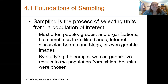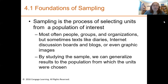Sampling, as you know, is the process of selecting units from a population of interest. Most often these are people, groups, and organizations, but sometimes texts like diaries, internet discussion boards, blogs, or even graphic images. Our population can be really anything, and we want a sample from it. By studying the sample, we hope we can generalize results to the population from which the units were chosen. We often do not have the time, resources, or ability to study the whole population, so we draw a sample and draw conclusions about the population.